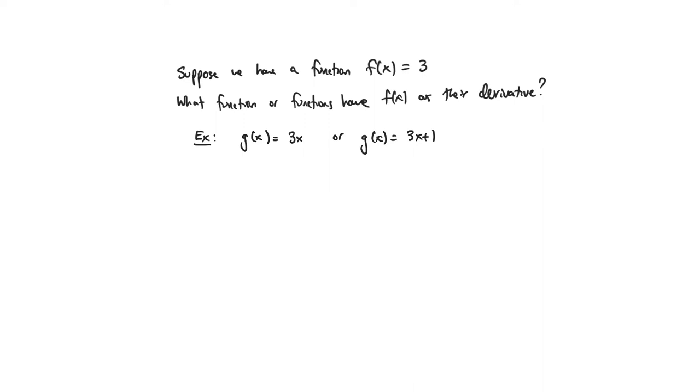And so no matter what constant I add on here, it doesn't change what the slope of the function is at any given point. So I really could have added any constant, plus 1, plus 2, minus a million, doesn't matter.